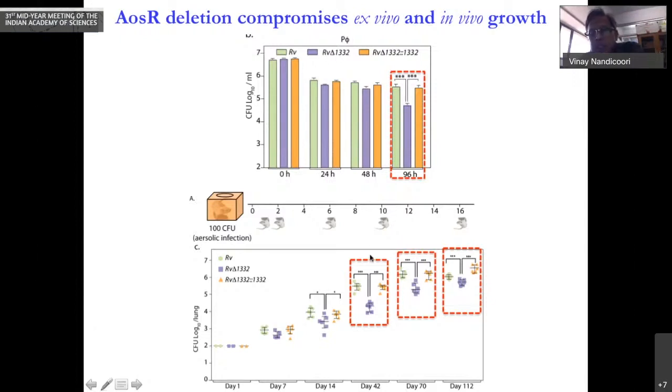We have done the same experiment in a mice infection model. You take mice and aerosolically infect with either wild type, mutant, or complemented strain. After that, you sacrifice the mice on different days and look into the bacillary load in their lungs. You can very clearly see by day 14 itself that the mutants have much lower survival on day 42, 70, and even 120 compared to wild type or complemented strains. It is approximately 10 to 50 fold lower depending on the time point.